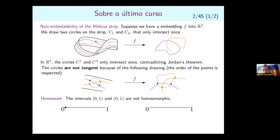We need to prove that the images of the two circles cannot be tangent — they must actually intersect. The argument: draw a small circle around the intersection point of these two circles in the strip. Going around that small circle, the order is purple, orange, purple, orange. This ordering must be preserved in the plane, so you must cross the other circle. You can prove this using Jordan's theorem for closed curves, showing the circles cannot be merely tangent.